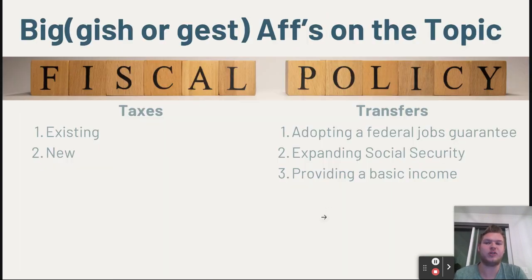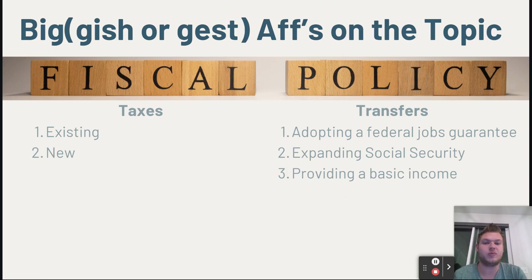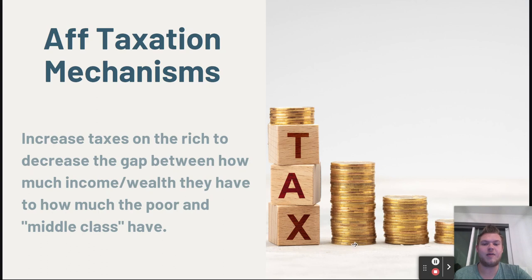Now we're going to go over 20 of the biggest affirmatives on the topic from a variety of sources — briefs, open evidence, Facebook and Reddit groups, discords, and the literature. We're going to talk about five different areas. First, taxes — specifically existing taxes on the rich as well as new taxes that could be adopted, but only briefly. Then we'll talk about transfers, which are the three main policies: adopting a federal jobs guarantee, expanding social security, and providing a basic income.